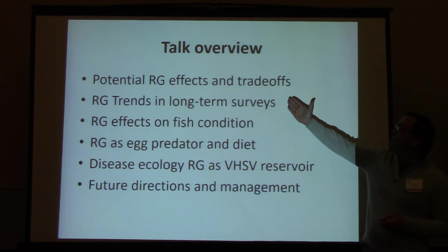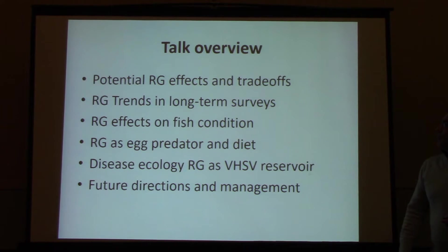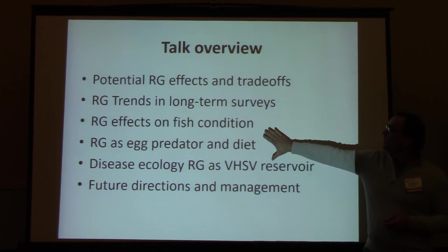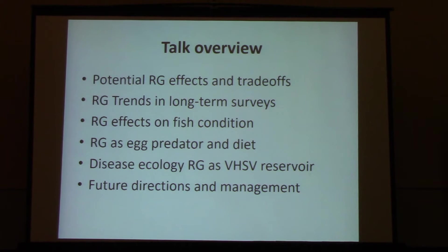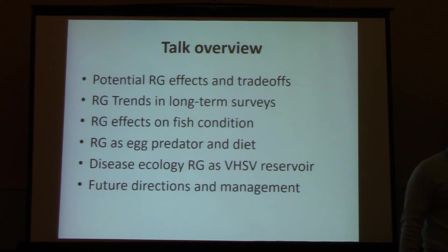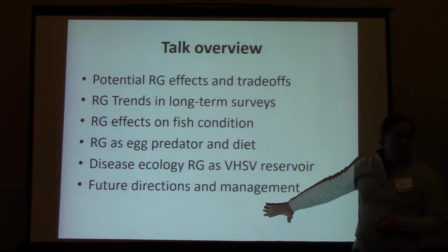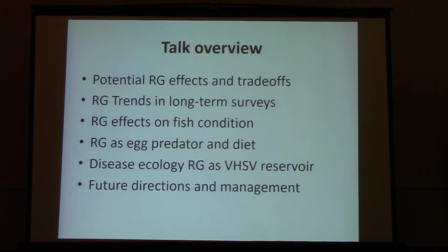As a quick overview, I want to talk about potential round goby effects and the trade-offs I mentioned. We have some round goby trends like everyone else, based in nearshore surveys we've been doing for muskellunge and other fish species where round gobies have showed up. We're going to take a specific look at round goby effects on fish condition, egg predation and diet, and then disease ecology. This is a lot to cover, but I'm giving you a flavor of our work and some thoughts about future directions.